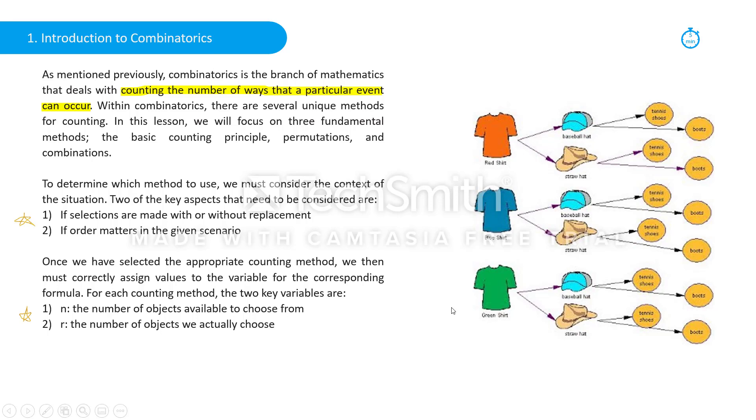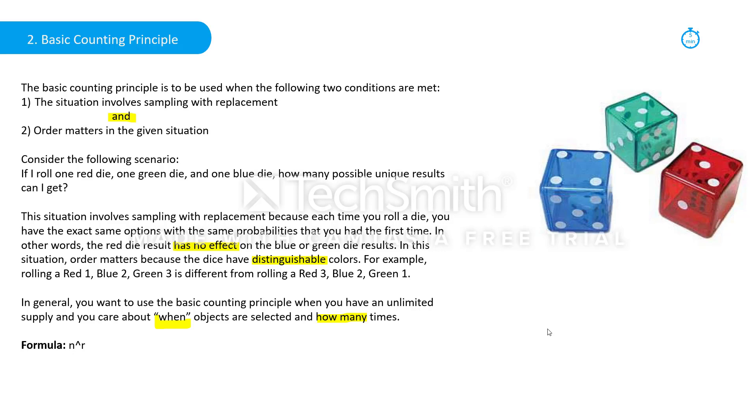So one type of method that can be used is the basic counting principle. We want to use this if it's a situation that has sampling with replacement and if order matters in that situation. And if that is the method we want to use, the formula is going to be n to the r—the options available to the number of options we actually choose.